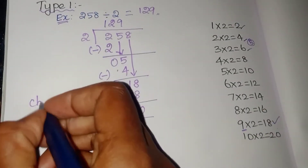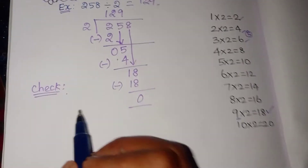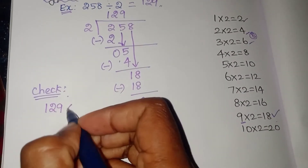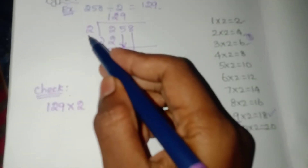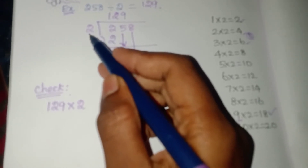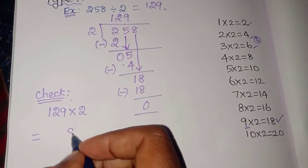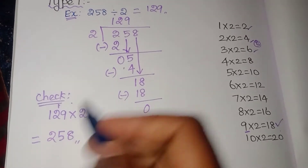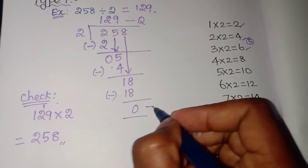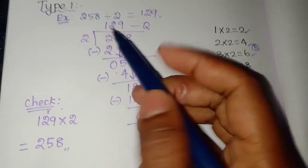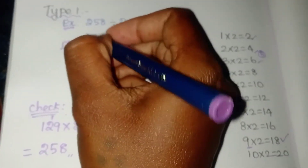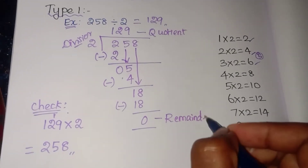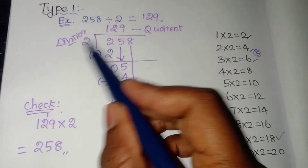Next, checking — whether the answer is correct or not. For that, you have to check using multiplication. If we multiply the divisor and the quotient, we should get back the dividend. This is the divisor, and this is the quotient, and this is the remainder.